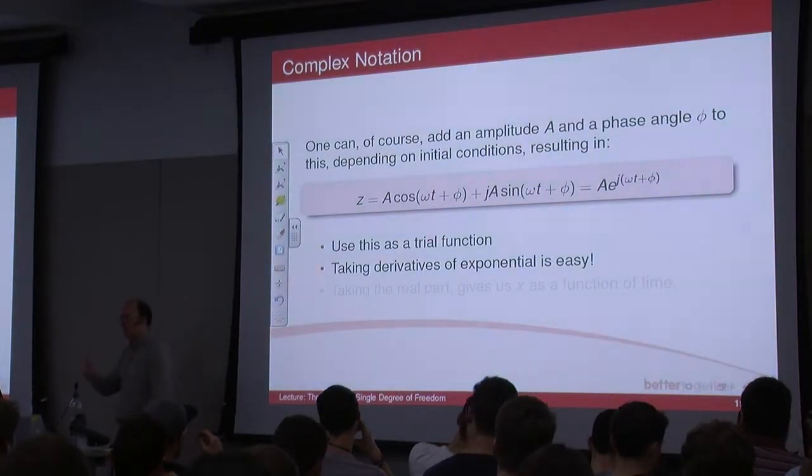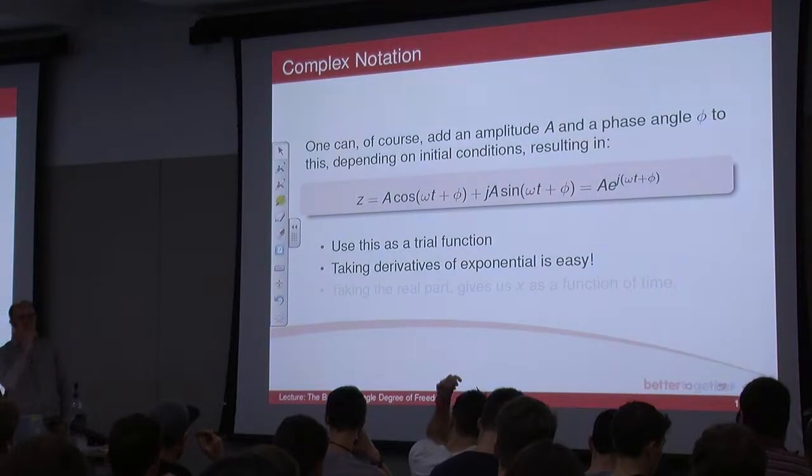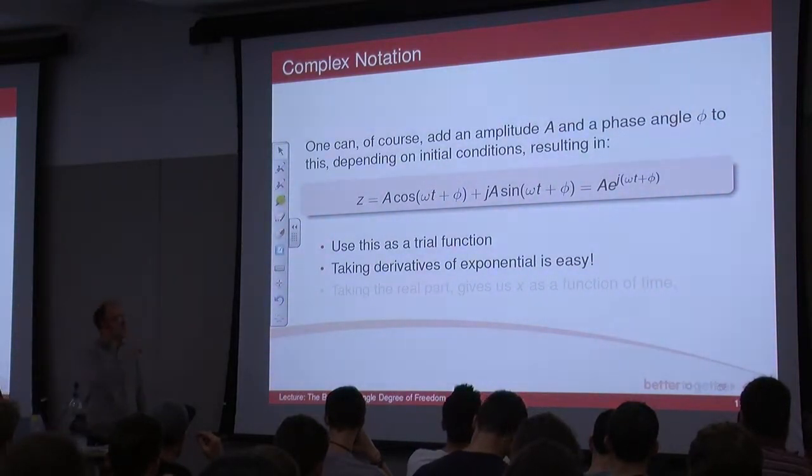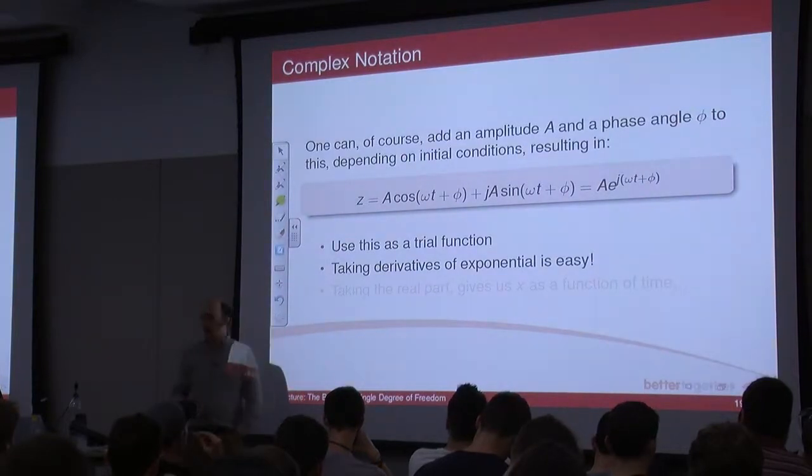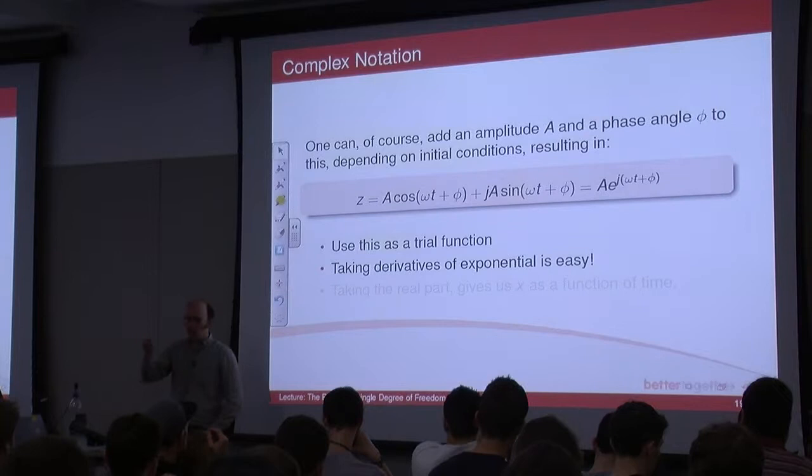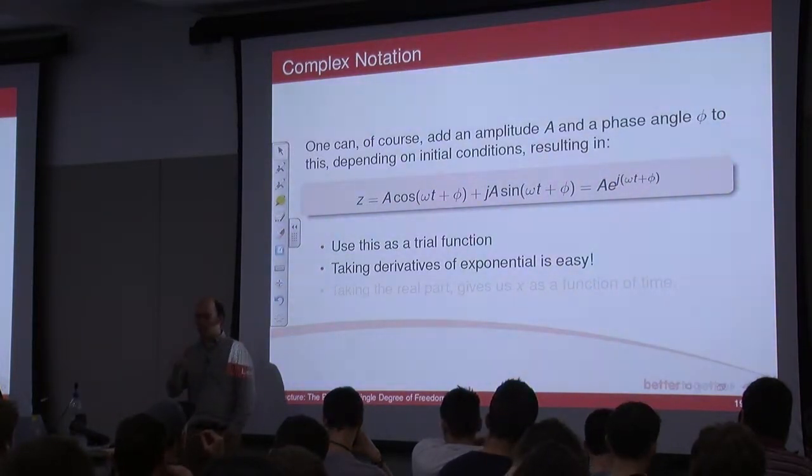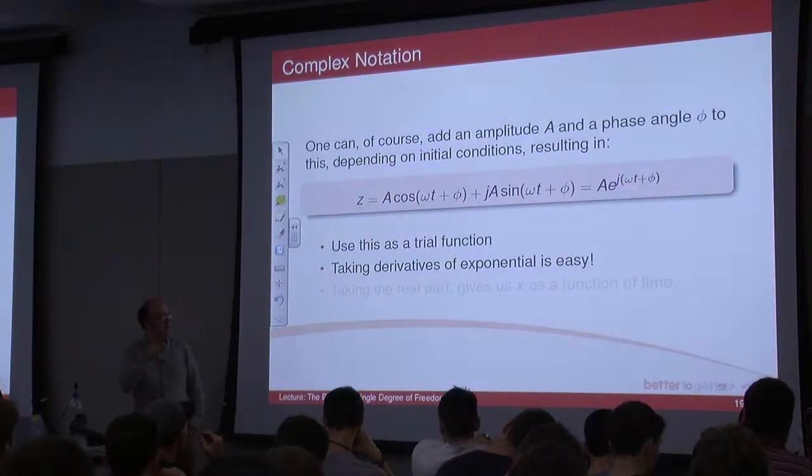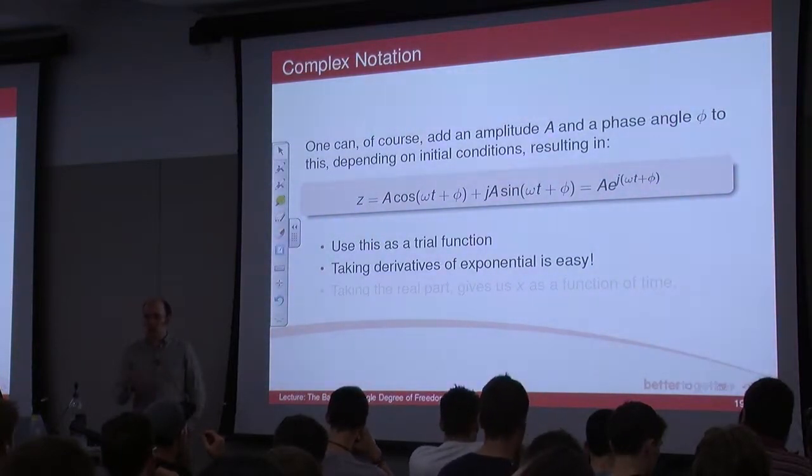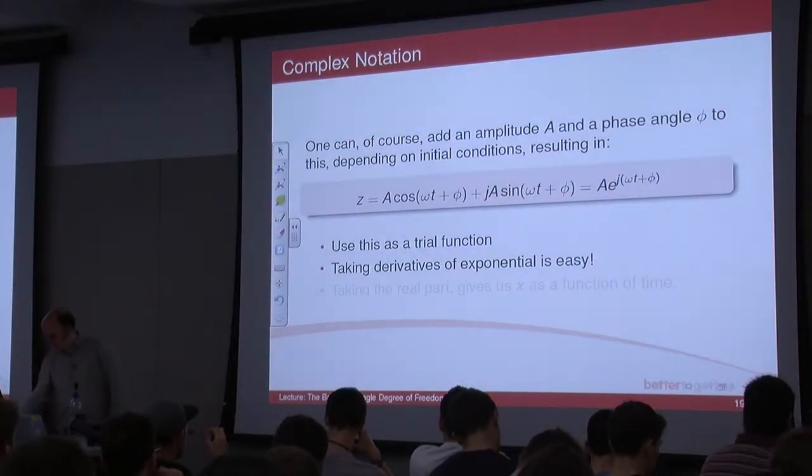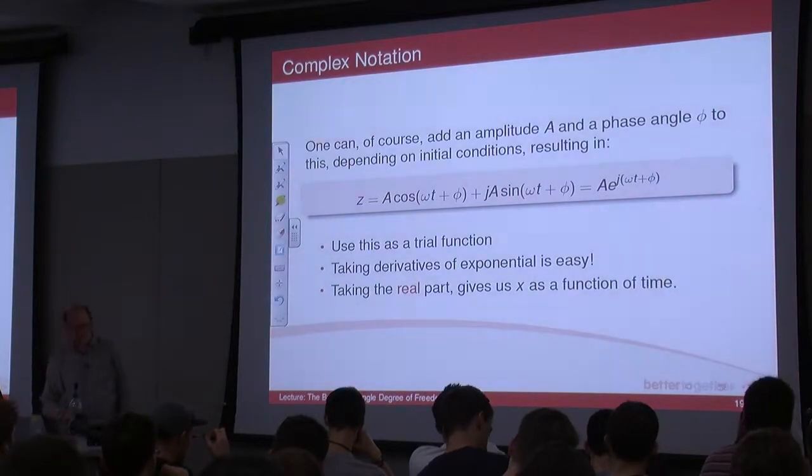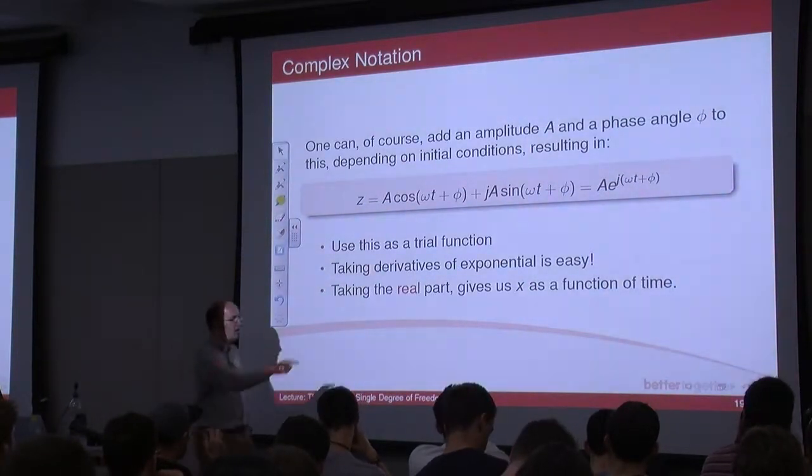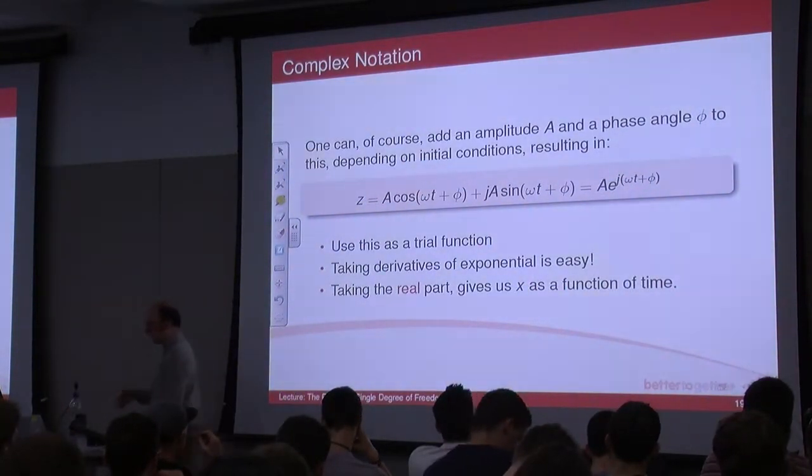You take the derivative of the number, you get the same thing back. And e to the j omega t, all that happens is you end up with e to the j omega t, times by whatever's in front of the t. So, the j omega comes out. And you do that again to get the second derivative, another j omega comes out, j squared is minus 1, so you end up with minus, and you have omega squared, because the omega comes out. So, you end up with the same thing. We could apply that. And you take the real part of that number, and you get X as a function of time, which is that cosine.